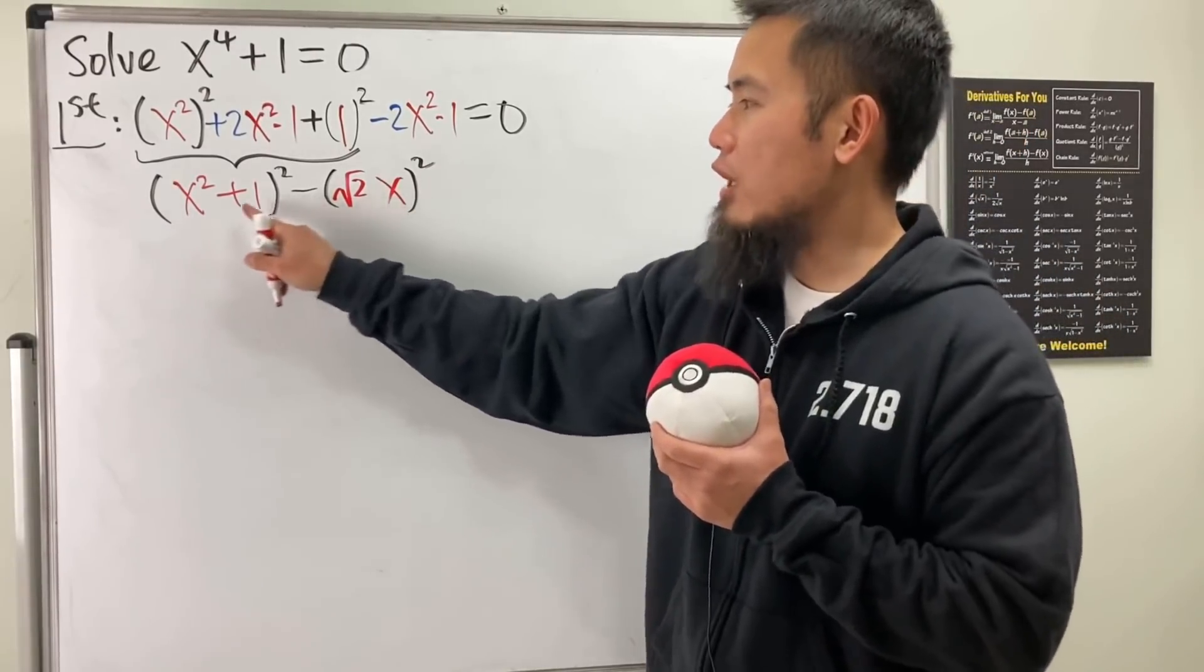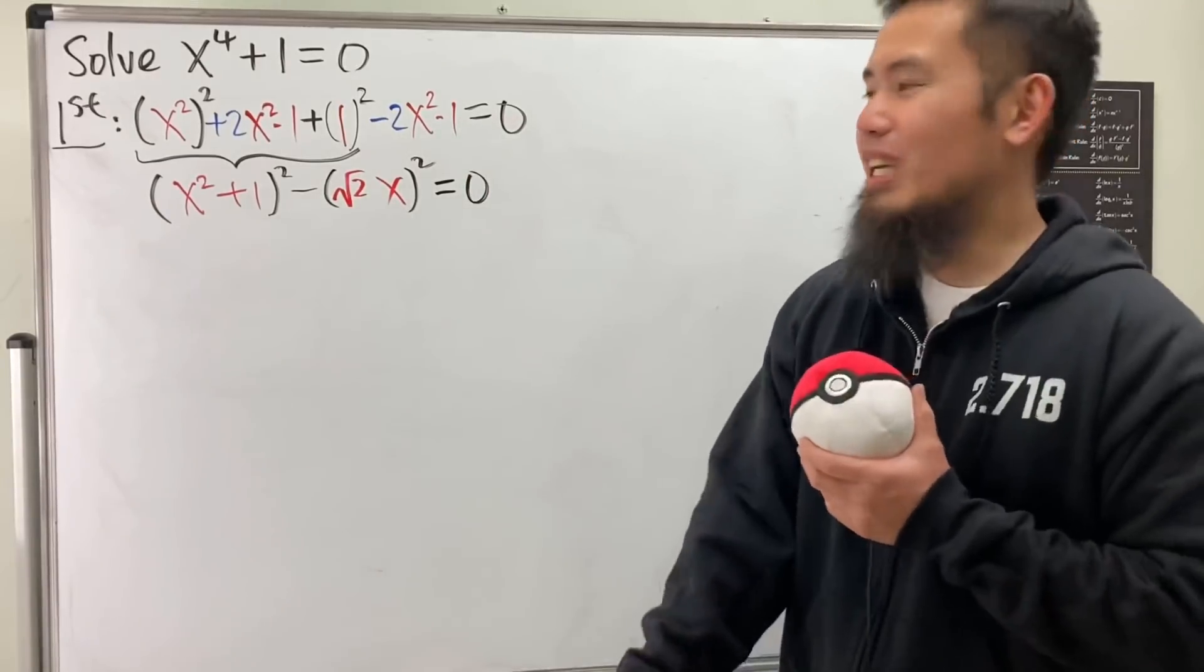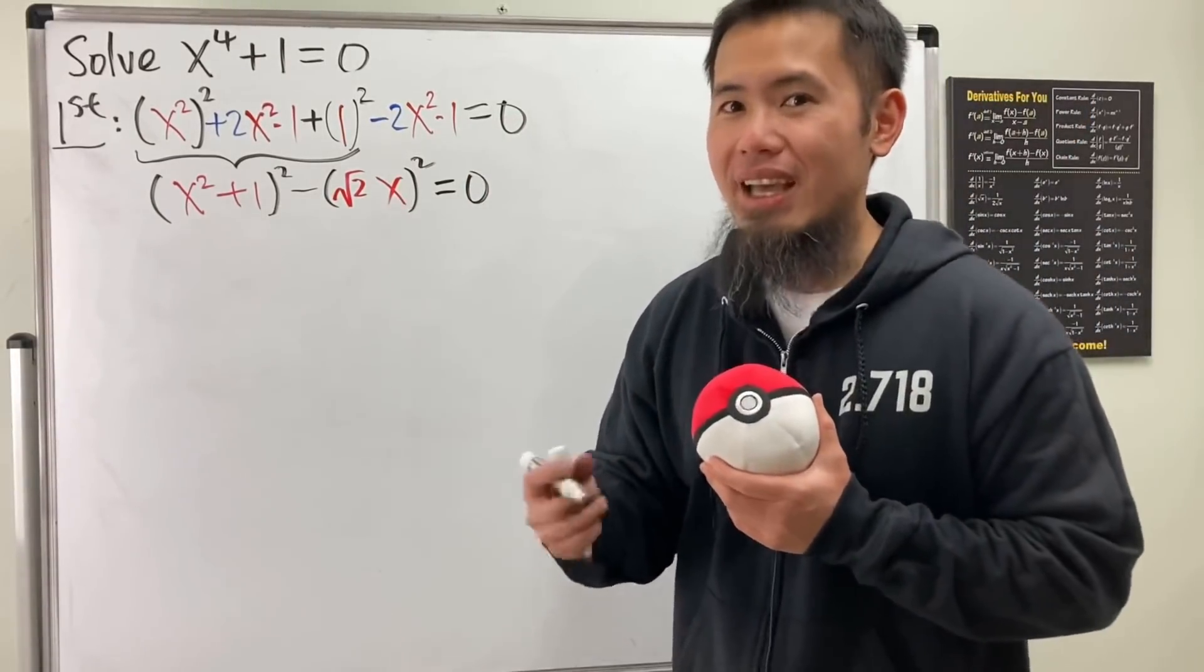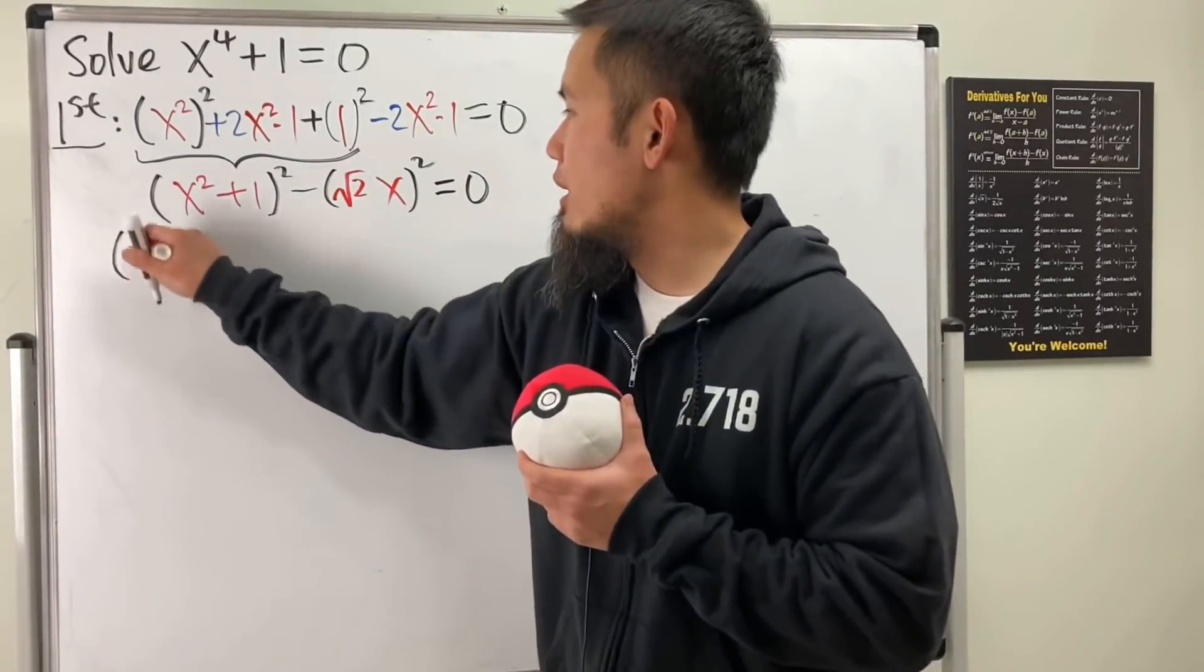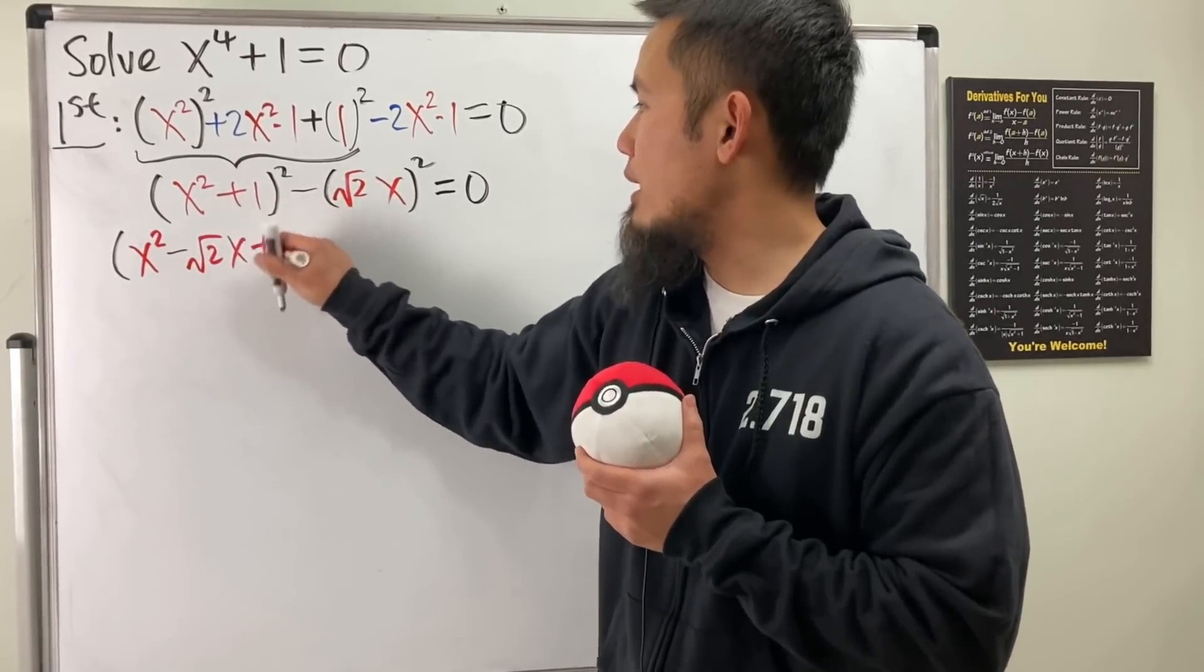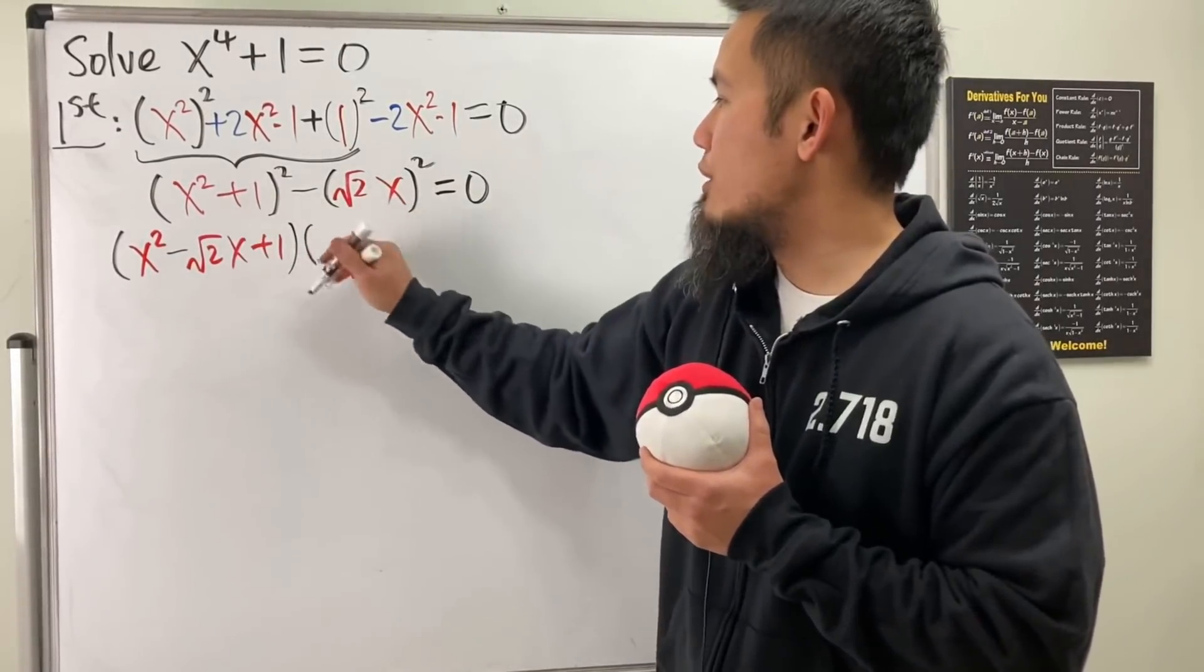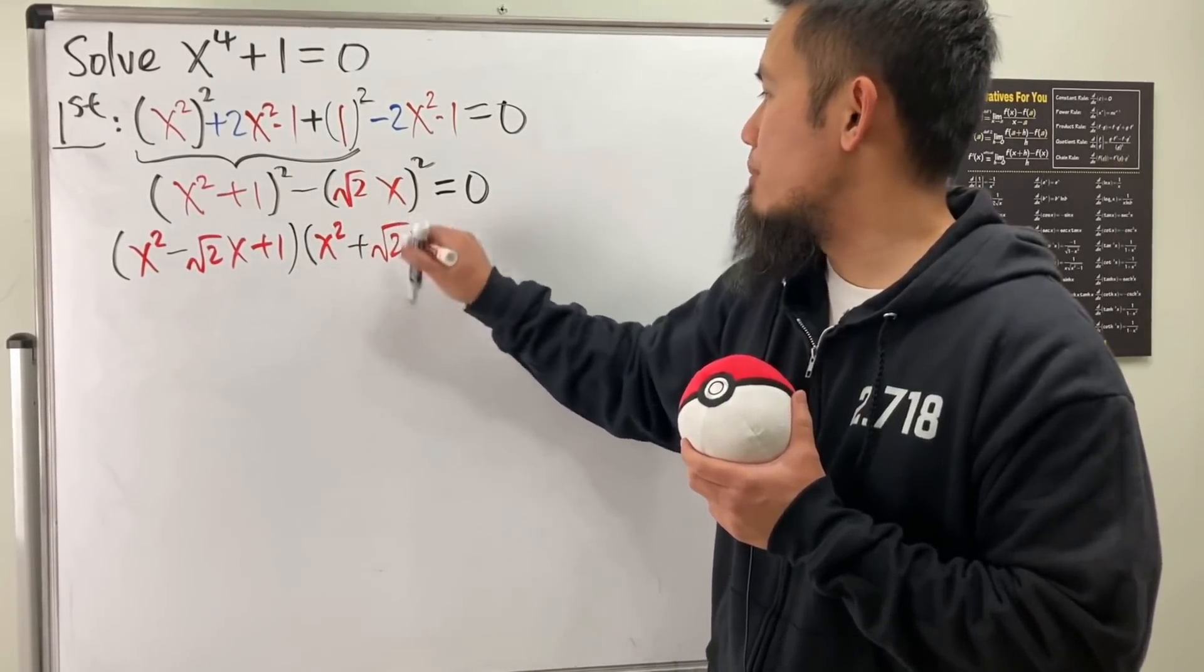Now this is so beautiful, isn't it? Because we can just factor it as the difference of two squares, which is of course this minus that, which is x squared minus square root of 2x plus 1, times this plus that, which is x squared plus square root of 2x plus 1.